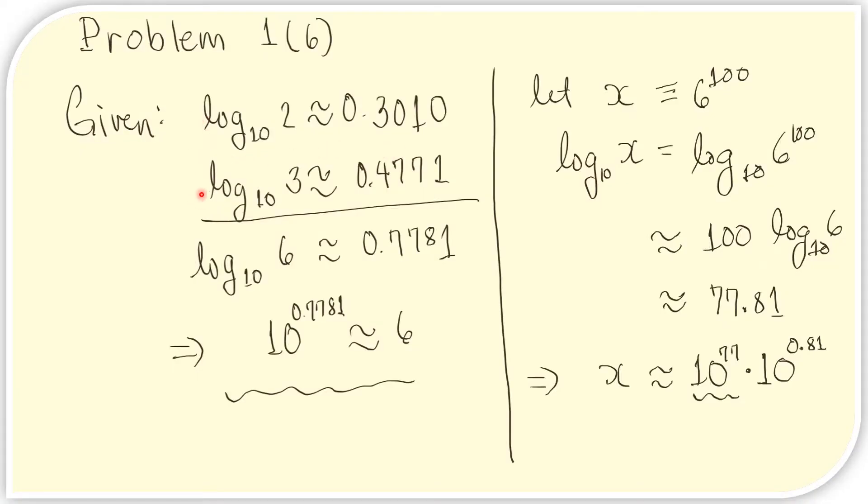Here we write the things we know from the problem. From these two facts, we can say that the log of 6 to the base 10 is equal to this. Because 6 is the product of 2 and 3, the log of 6 is just the sum of their logarithms.